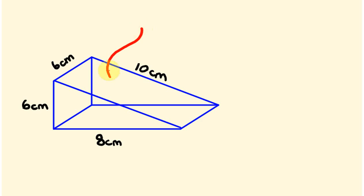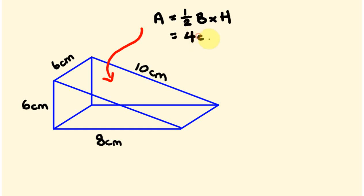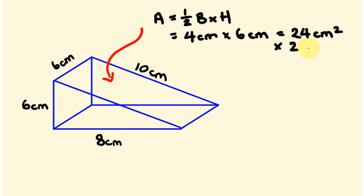I'll put an arrow going there — I'm looking at this particular triangle here. What's the area of a triangle? The area of a triangle is half the base times the height. For this triangle, the base is 8 centimeters, so half of that is 4 centimeters, times the height which is 6 centimeters. So 4 centimeters times 6 centimeters is 24 centimeters squared. Now there are two of these, so straight away I can double it: times two equals 48 centimeters squared.